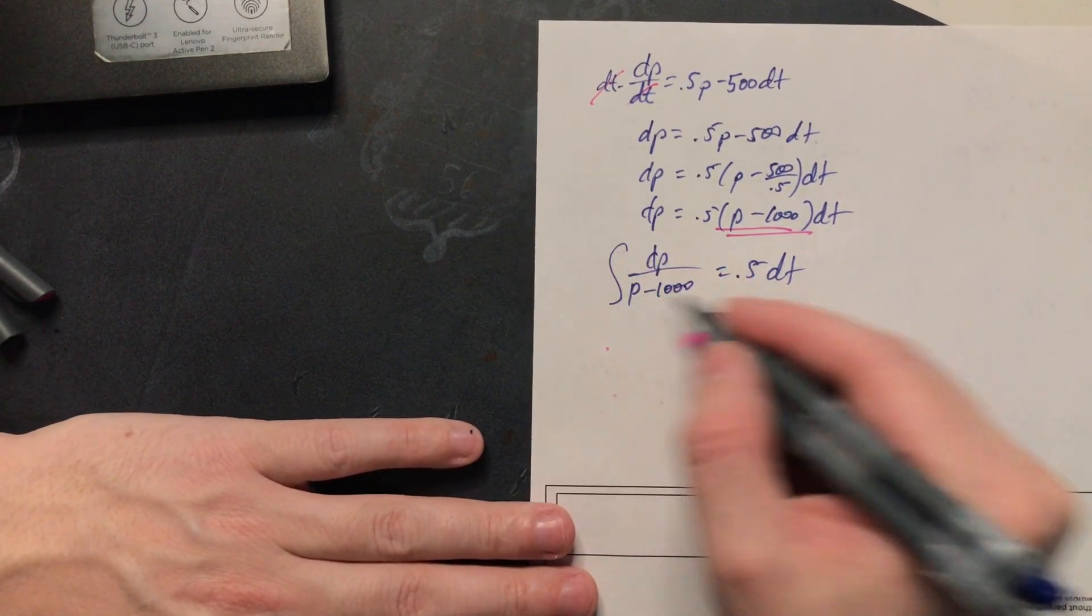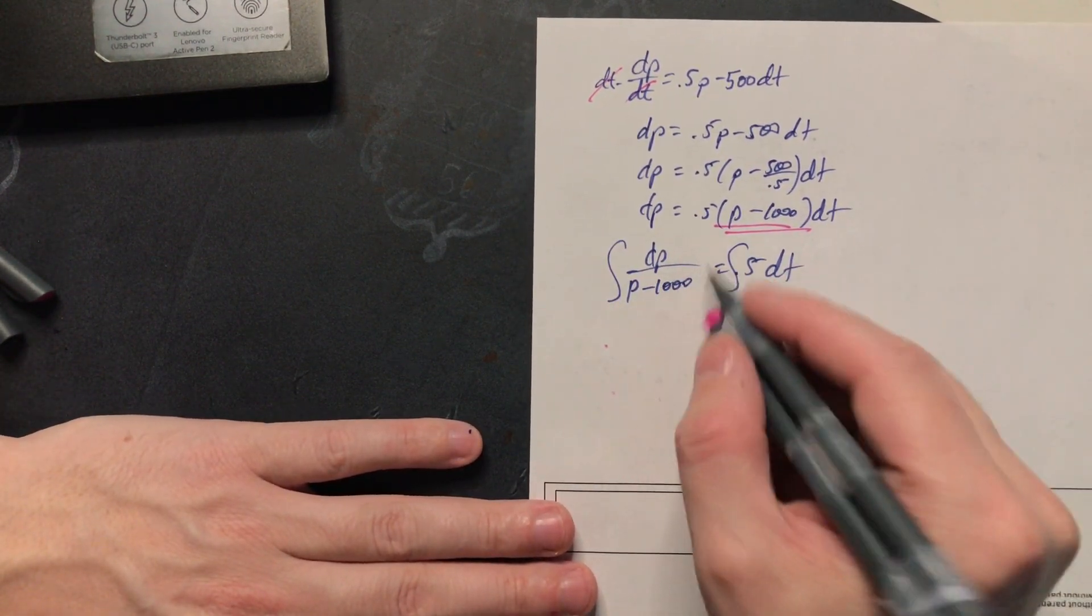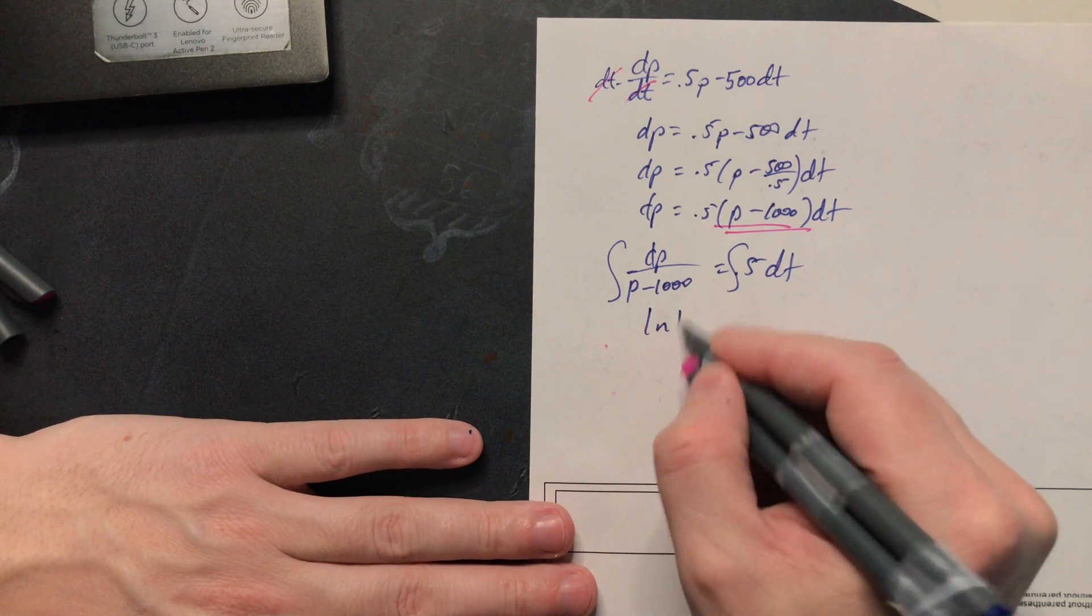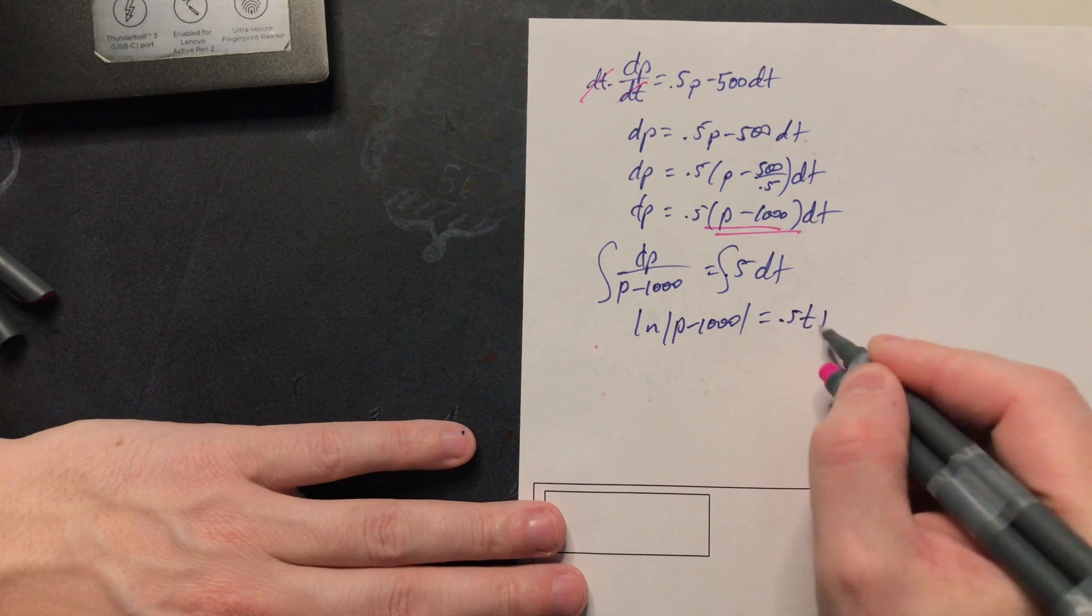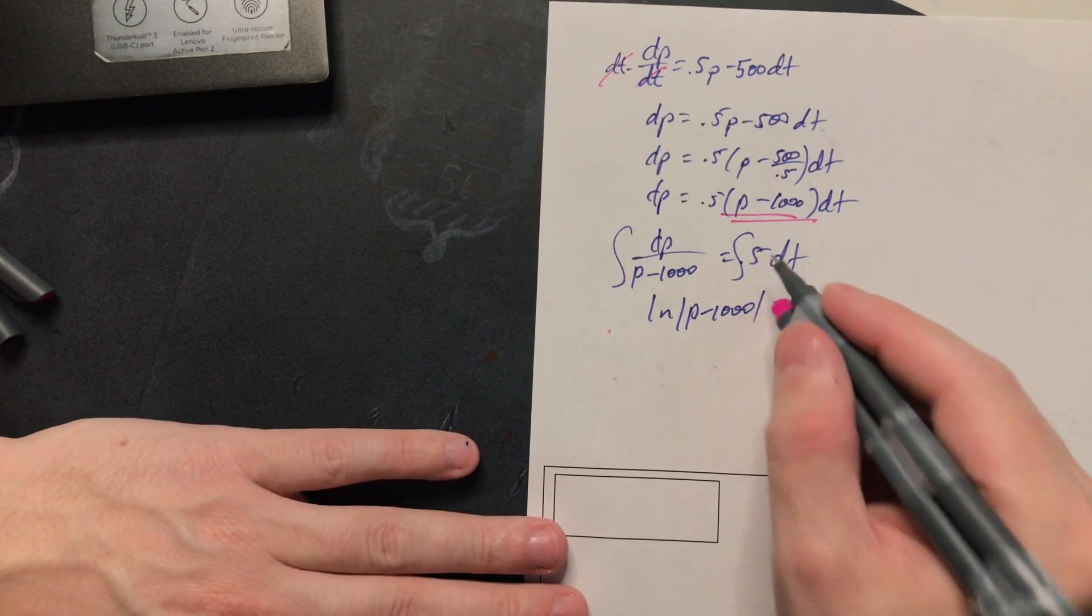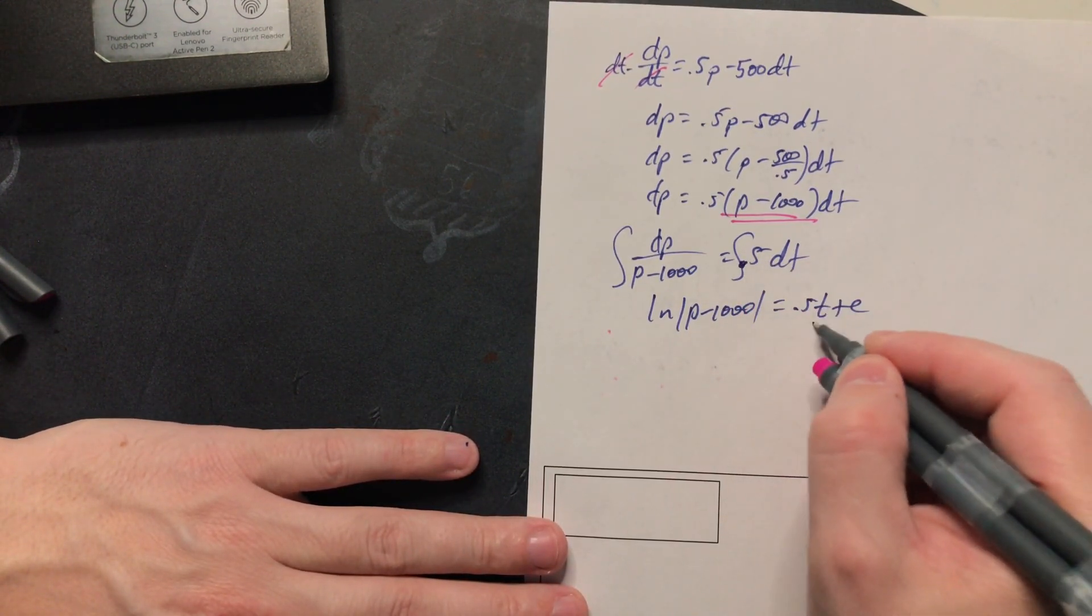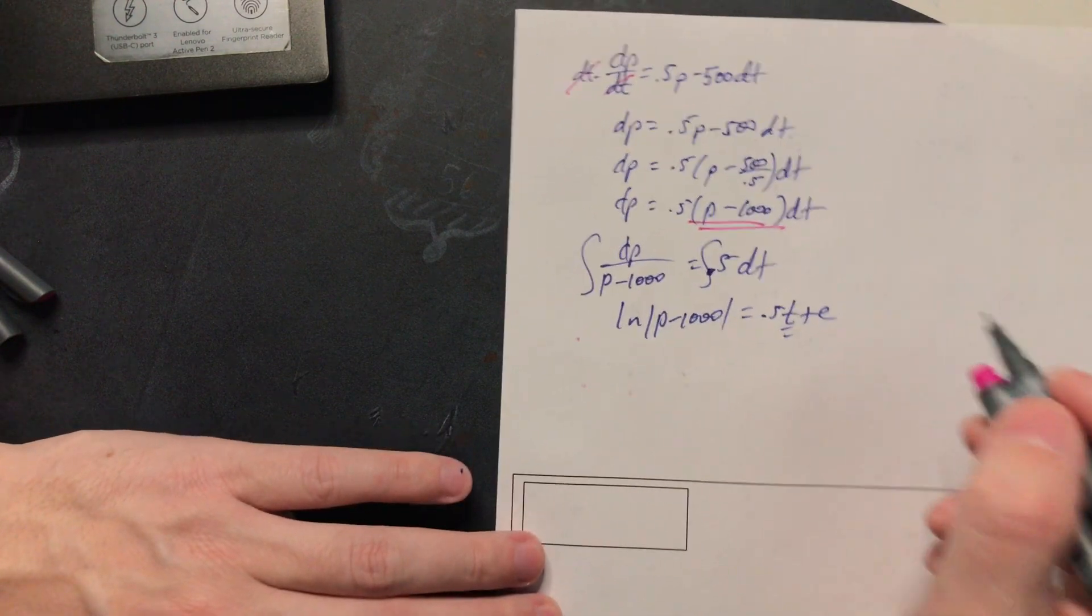Now I just need to integrate both sides like this. So you're going to have ln of p minus a thousand is equal to 0.5 t plus c. So this is a constant here so it gives a t and you attach the constant c at the end also.